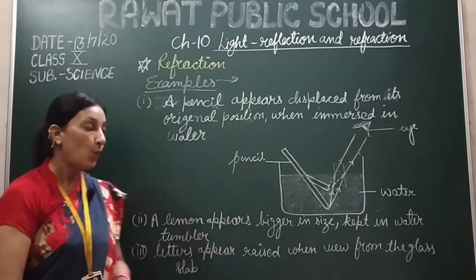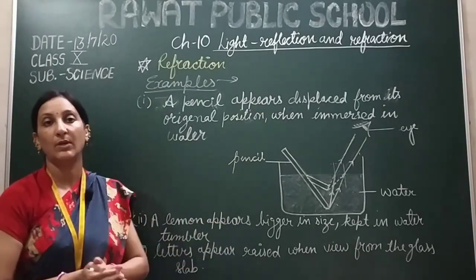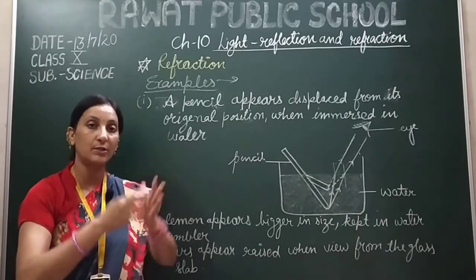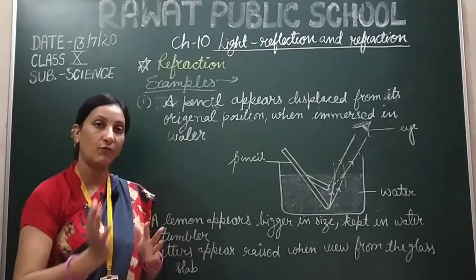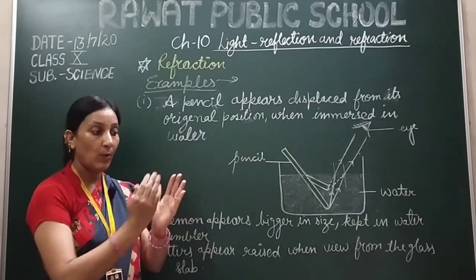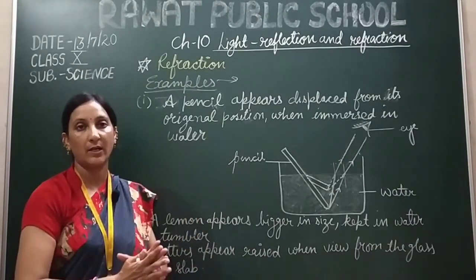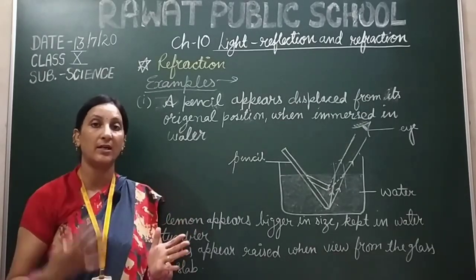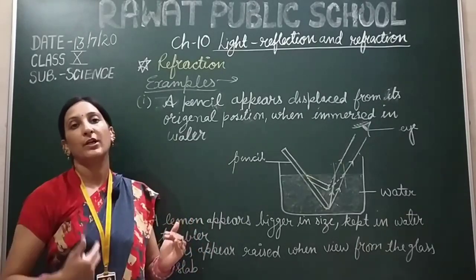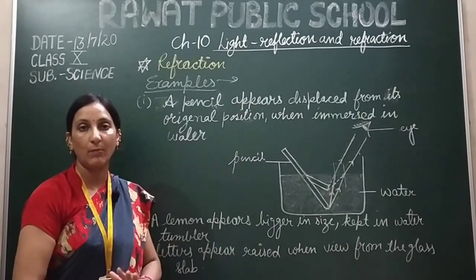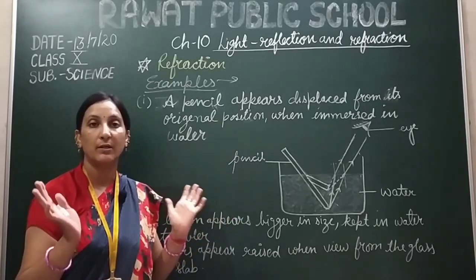For the same reason, when a lemon is kept in water — if we have a glass tumbler and put a lemon in it — it appears bigger than its actual size. This is because the light coming from the lemon travels from the denser medium to the rarer medium, bends away from the normal, and then enters the eye, so the lemon appears bigger.